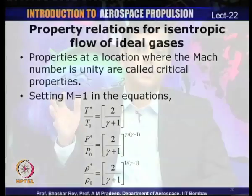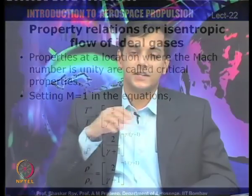This covers the property relations for ideal gases, inherently assuming isentropic flow. Next, we will analyze isentropic flow through nozzles, considering two types: a converging nozzle and a converging-diverging nozzle.